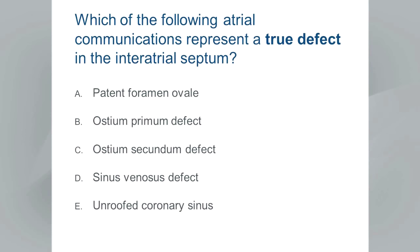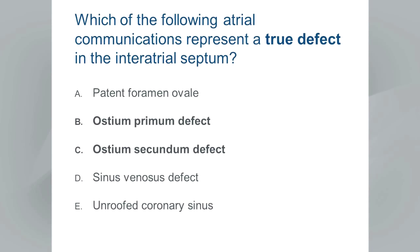Audience poll: which of the following atrial communications represents a true defect in the atrial septum? Options: patent foramen ovale, ostium primum defect, ostium secundum defect, sinus venosus defect, or an unroofed coronary sinus. There may be more than one correct answer. The intended correct answers are ostium primum defect and ostium secundum defect. Patent foramen ovale, sinus venosus, and unroofed coronary sinus are not true defects in the atrial septum, but they are interatrial communications nonetheless.